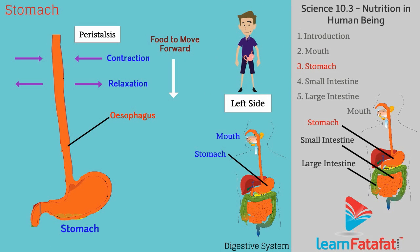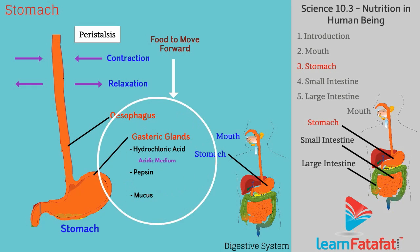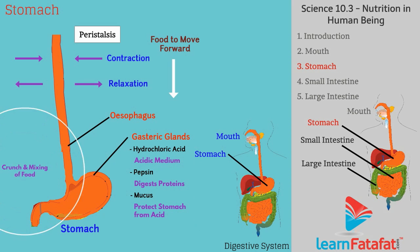The stomach is located at the left side of the abdomen. In the stomach, gastric glands present in the walls of the stomach secrete three juices: namely hydrochloric acid, enzyme pepsin, and mucus. In the presence of the acidic medium provided by hydrochloric acid, pepsin digests proteins. Mucus protects the inner lining of the stomach from acid. The walls of the stomach churn the food and help in mixing the gastric juice with the food.